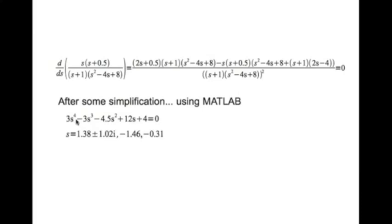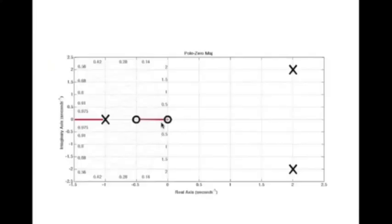A fourth-order equation gives four roots. The two complex roots cannot be break-in points because they are complex. Looking at the real axis portion of the root locus, the root locus between the two zeros is between 0 and −0.5, so −0.31 is valid. −1.46 falls outside that region, so there is no break-in there.